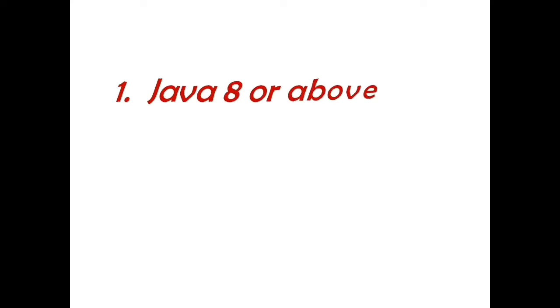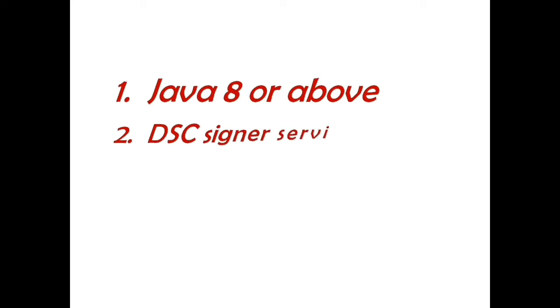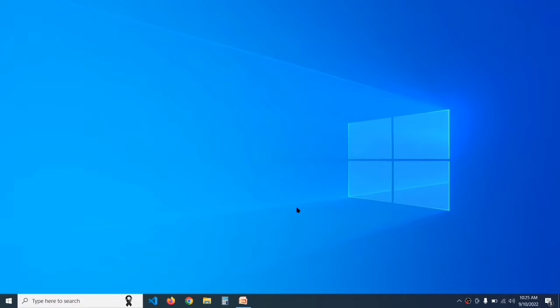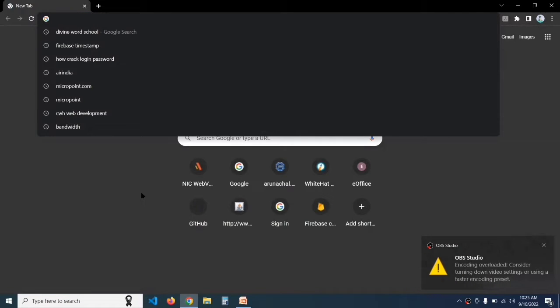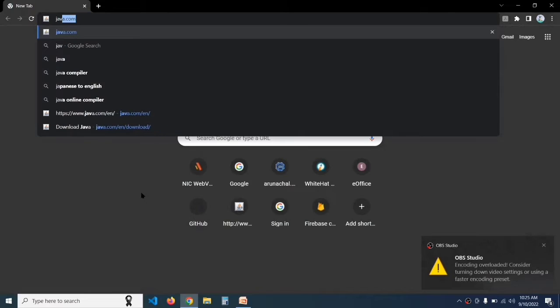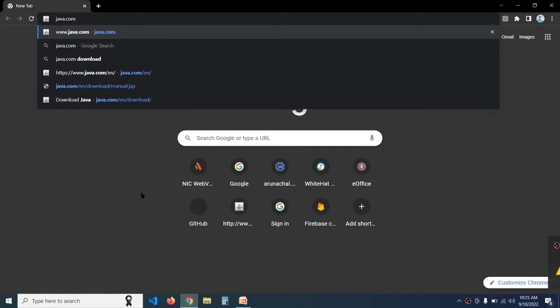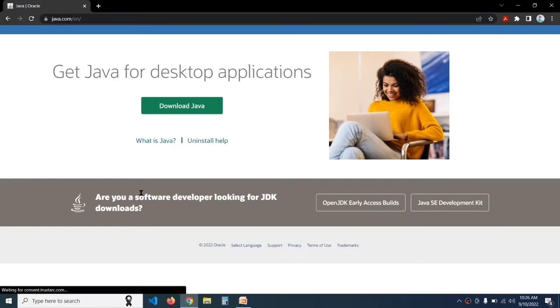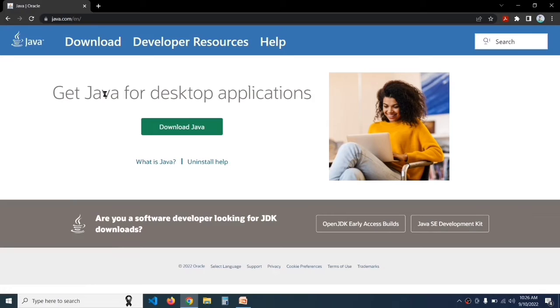First we have to download Java 8 or above, the DSC Signer Service, and the DSC software. So first I'll tell you how to download Java 8 and the DSC Signer Service. You have to open any browser — I am using Chrome — and in the search bar type java.com and click Enter.